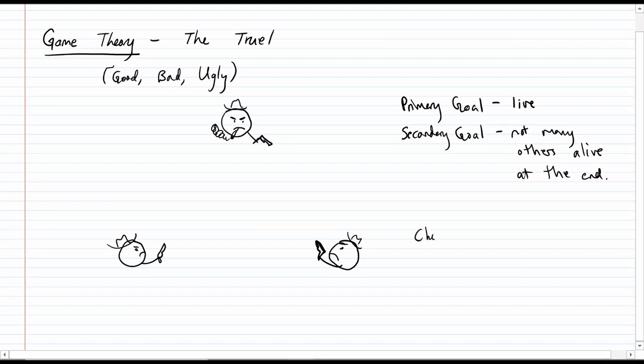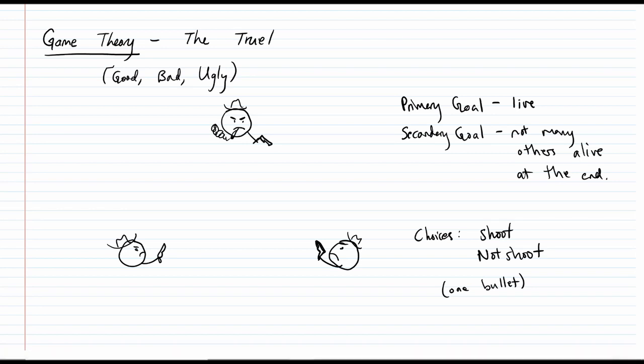What are your choices? You can either shoot or you can not shoot. And we'll assume that each person only has one bullet. I think this is probably a fair assumption. Even if they had multiple bullets, in the time that would take them to reload and take another shot, that's sort of a whole other game. So let's think about what if this was a simultaneous game? That is, everybody makes their choices at the same time.